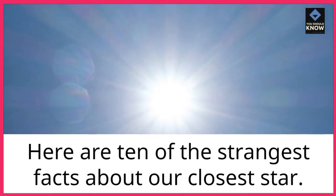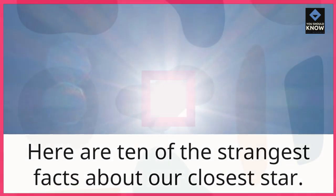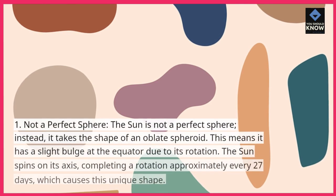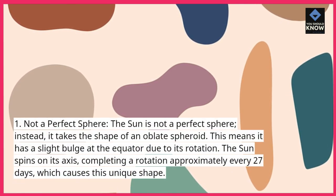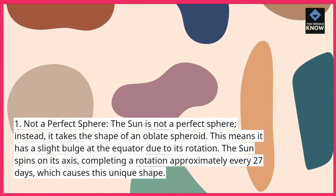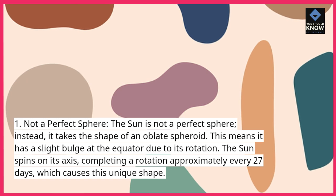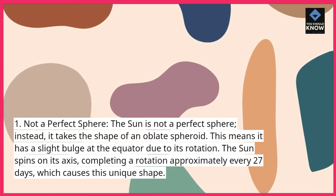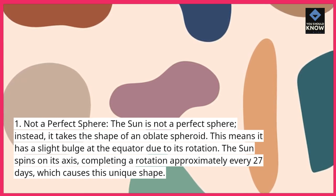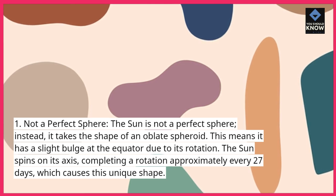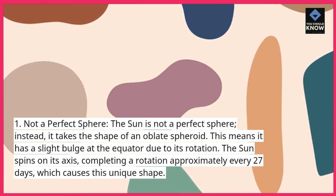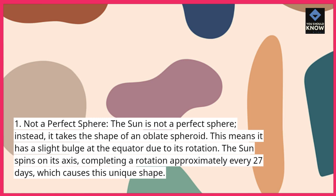Here are 10 of the strangest facts about our closest star. The sun is not a perfect sphere. Instead, it takes the shape of an oblate spheroid. This means it has a slight bulge at the equator due to its rotation. The sun spins on its axis, completing a rotation approximately every 27 days, which causes this unique shape.